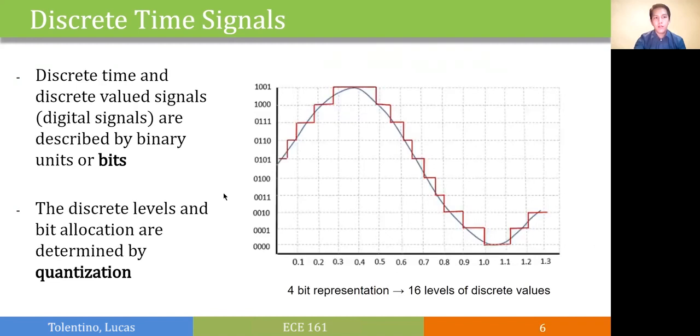Discrete time signals can also have discrete levels, such as what we call digital signals. And these digital signals are described in terms of bits or binary units. So the number of levels for these signals are determined by the process called quantization.